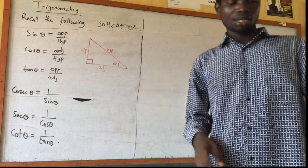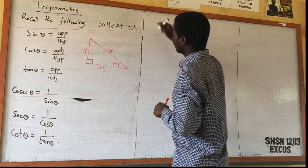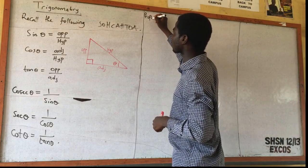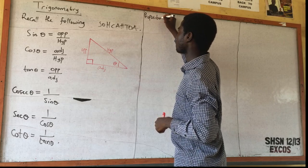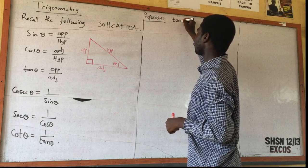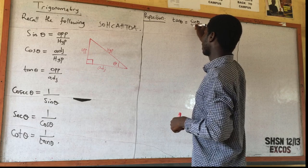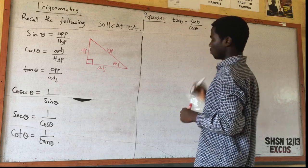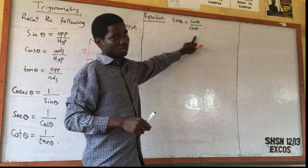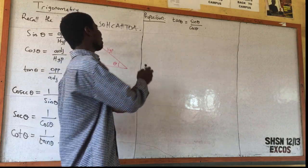Now let us do something. The first proposition is that tan theta is the same thing as sine theta over cos theta — when you have sine theta over cos theta, it is the same thing as tan theta. Now let us prove this.